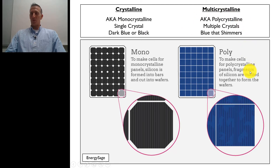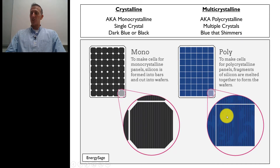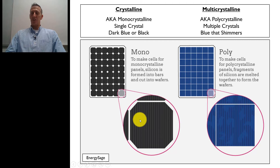The multicrystalline module — shown on the right hand side of the screen — is also known as polycrystalline. This is where we have multiple crystals. As you can see on the cell, there are little crystals that kind of have a shimmer to them — it's a blue that shimmers. These are typically lighter in color with a shimmer; as you tilt them or the sun hits them differently, you can see some different reflectance versus the monocrystalline, which is a pretty flat dark black or dark blue.